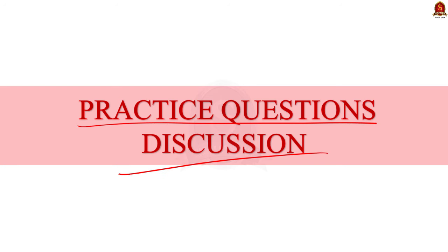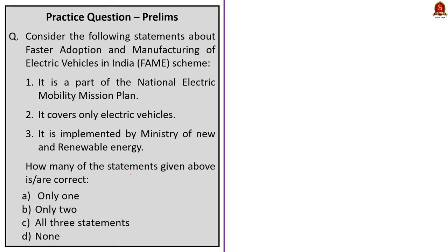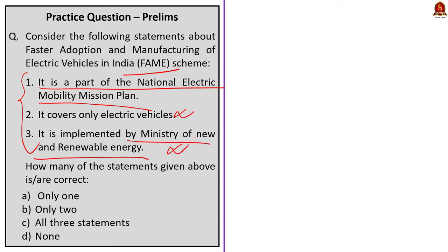Take a look at the first question about the FAME scheme. Three statements are given and you have to find how many are correct. The first statement — it is a part of the National Electric Mobility Mission Plan — is correct. The second statement — it covers only electric vehicles — is incorrect because it covers both electric and hybrid vehicles. The third statement — it is implemented by the Ministry of Renewable Energy — is incorrect because it is implemented by the Ministry of Heavy Industries and Public Enterprises. So the correct answer is option A, only one.